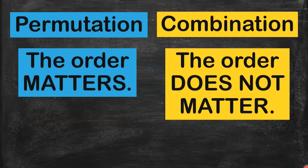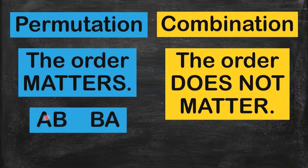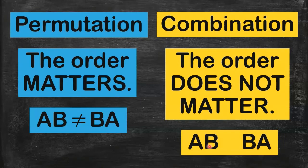What do I mean by that? In a permutation, if you have A, B, and then it becomes B, A — kung permutation yan, they are not the same. They mean different things. In a combination, A, B is the same as B, A. The order does not matter.